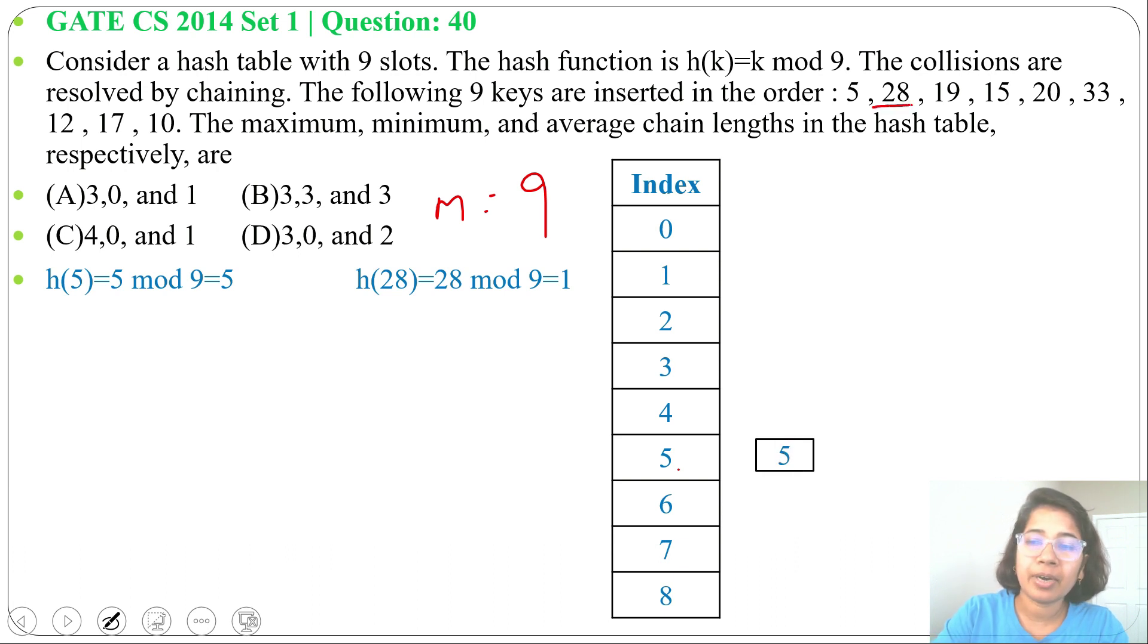Next, 28 divided by 9, remainder is 1. 28 will insert at slot 1. Next 19, 19 divided by 9, remainder is 1. 19 minus 18 is 1.